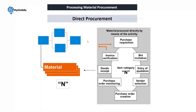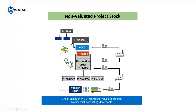To make it easier, I have segregated these steps into service procurement and material procurement. For non-valuated project stock, you are not looking to consider the valuation of your stock — only quantity will be tracked. In the system you have three options at project definition level: valuated, non-valuated, or no stock.